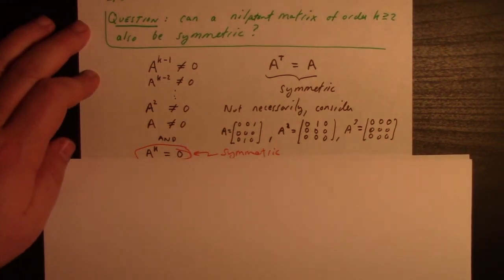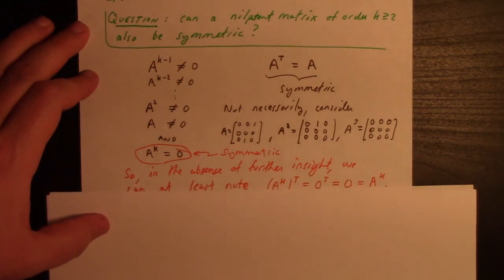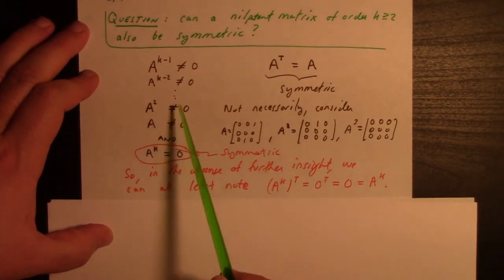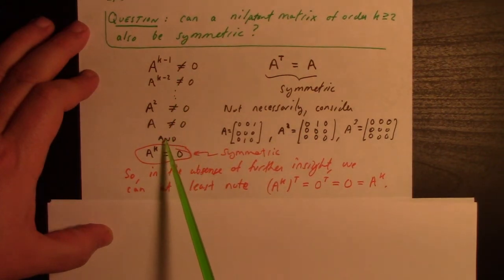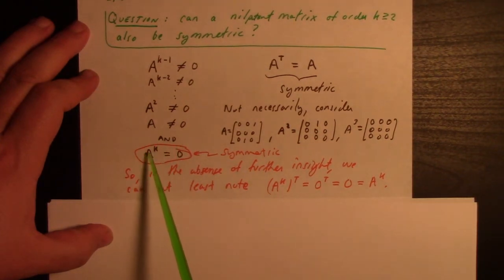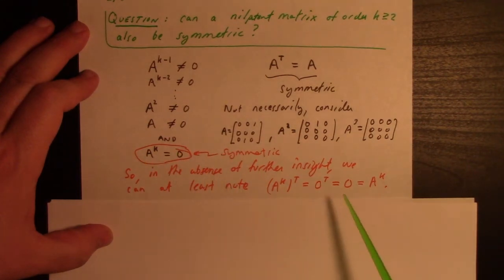The jury's out on whether that's generally the case, but this much we can say: if we look at the kth power, it's symmetric because the zero matrix is symmetric. Even though we can't be sure whether these are symmetric or not, we can be certain that when we raise it to the order of nilpotence, the kth power will be zero, which is symmetric.